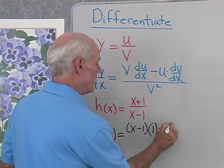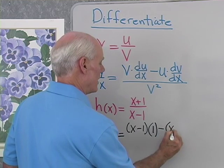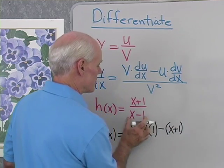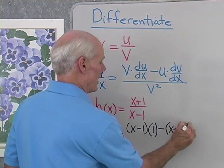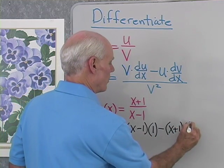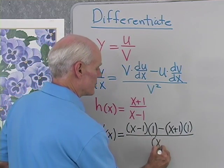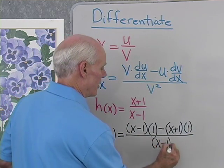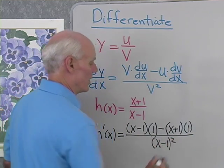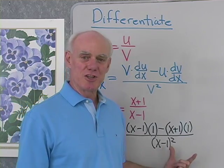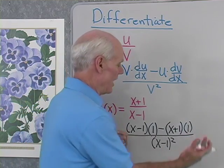Then minus the top, x plus 1, times the derivative of the bottom, which is just 1, all divided by x minus 1, that denominator, squared. So that's the application of the quotient rule.